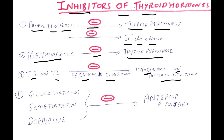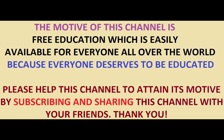Inhibitors of thyroid hormones: Propylthiouracil (PTU) inhibits thyroid peroxidase and 5'-deiodinase. Methimazole inhibits thyroid peroxidase. T3 and T4 feedback-inhibit the hypothalamus and anterior pituitary. Glucocorticoids, somatostatin, and dopamine all inhibit the anterior pituitary gland.